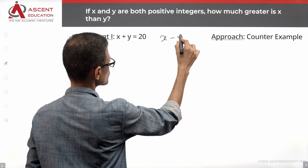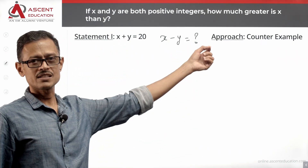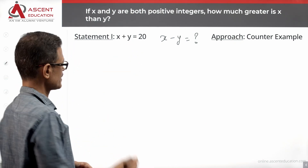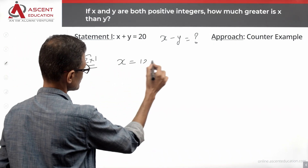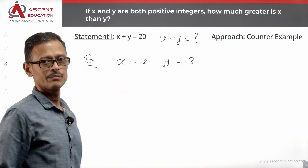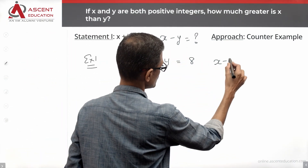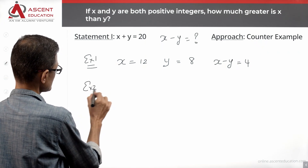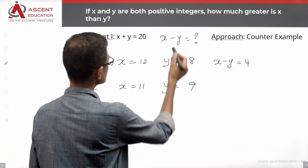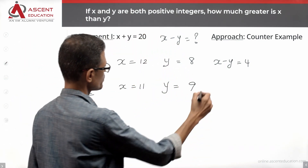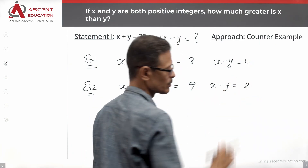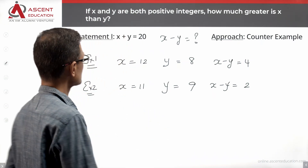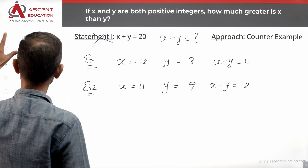We need to find out x minus y. The approach is the counter-example process. Statement 1: x plus y is equal to 20. Example 1: let x = 12, y = 8. Then x minus y = 12 minus 8 = 4. Example 2: let x = 11, y = 9. Then x minus y = 11 minus 9 = 2. We get multiple answers, not a unique answer, so Statement 1 alone is not sufficient.